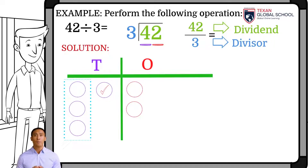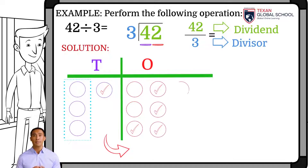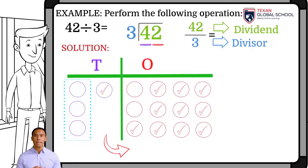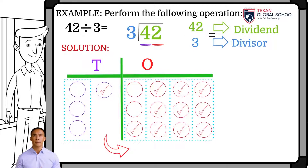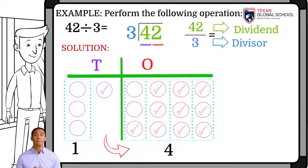In this case, we had one 10 left over. Therefore, we break it down into 10 1s and include those elements in the corresponding section. Likewise, we select elements, but now from the 1s in groups of 3. Once the elements have been grouped according to divisor 3, we count the groups of 10s and 1s. We have one group of 10s and 4 groups of 1s. These digits make up 14,